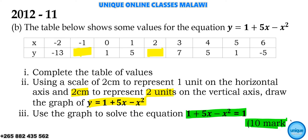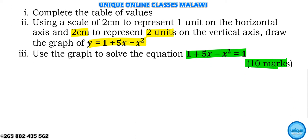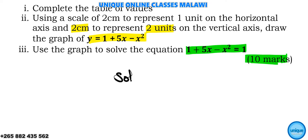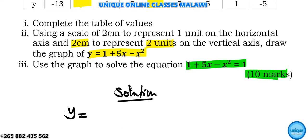This one we are going to solve now. What you need is to do the first part — completing the table values. I'm writing here: Solution. Our equation is y is equal to 1 plus 5x minus x squared.